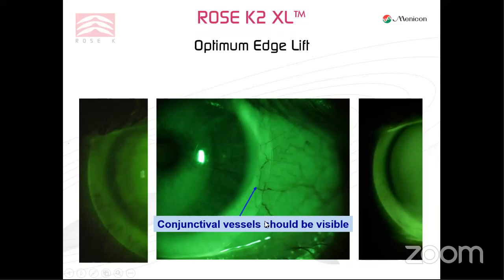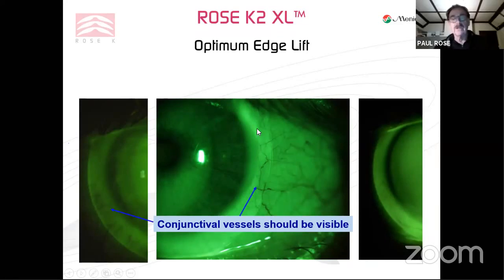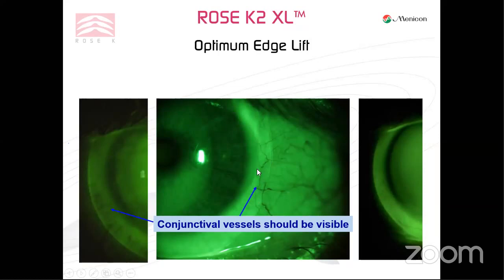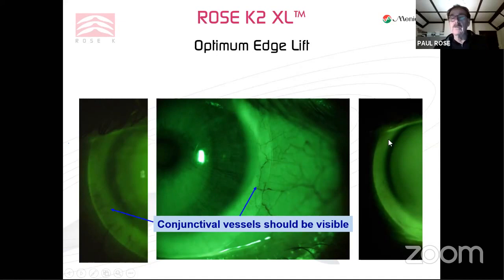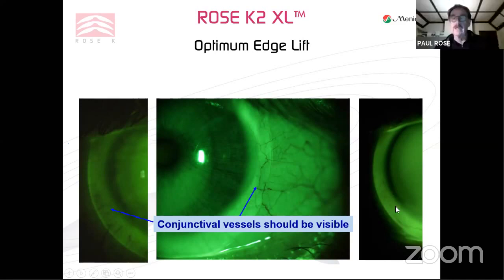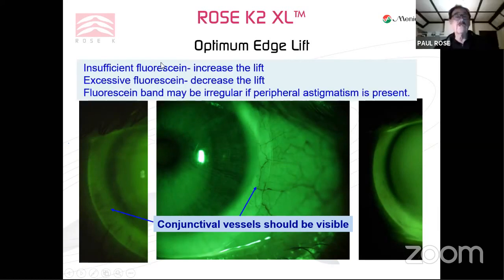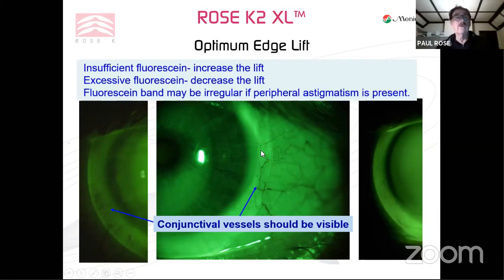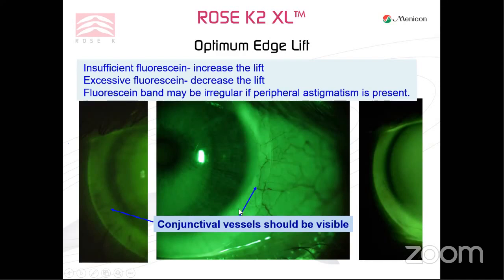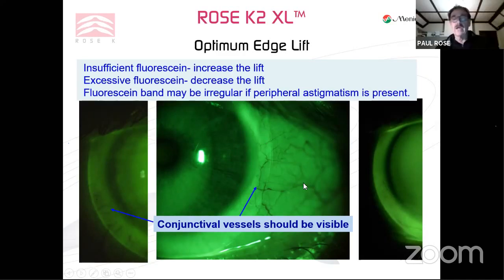Make sure when judging edge lift you always look at the fluorescence immediately after applying it to the eye. What we're aiming for is being able to see the conjunctival vessels through the fluorescence from the limbus outward. If it's getting a little too open, reduce the edge lift by 0.5. This is absolutely ideal. If there's insufficient fluorescence, increase the edge lift value; if it's excessive, decrease it. You must look all around the clock because the sclera is invariably asymmetric — try to get the fluorescence as even as you can around the clock.